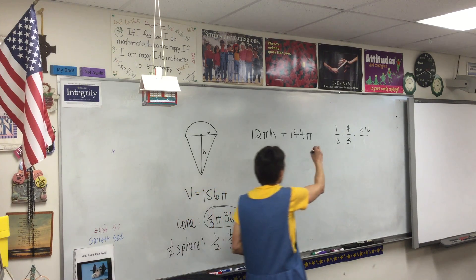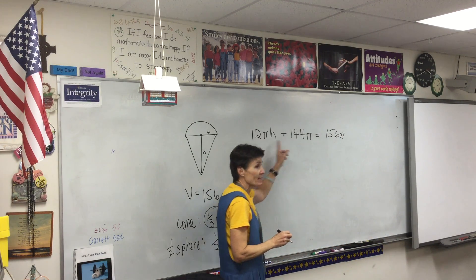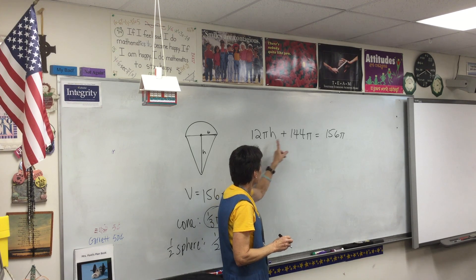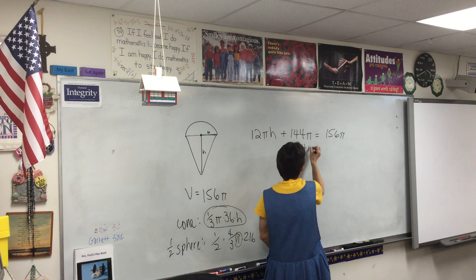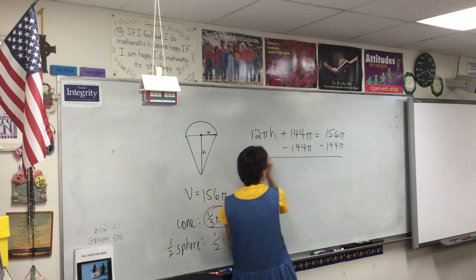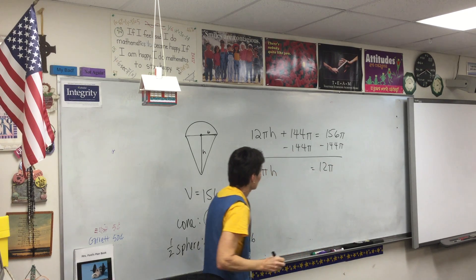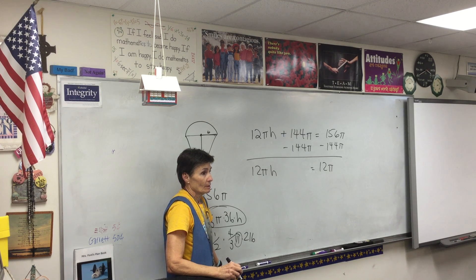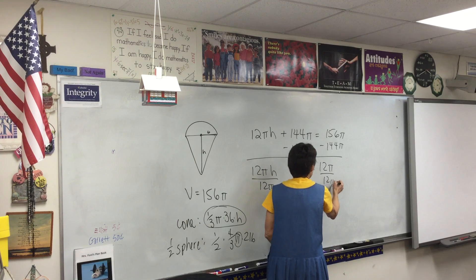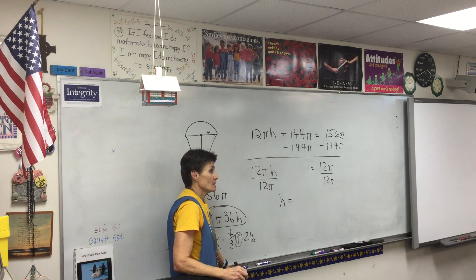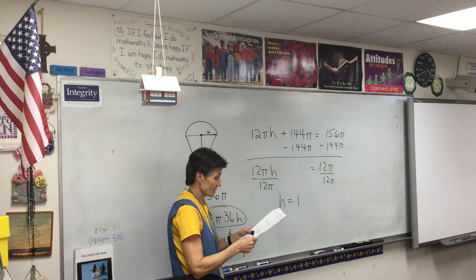And that has to equal the 156π. Now gang, these cannot be added together. Do you see that? They can't be added together because this one has an h. So what are you going to do? Subtract. Subtract 144π. Now I also heard somebody say divide by π. You can do that too. We'll do that next. What is that? 12. 12. Now I can either divide by just the π or I can go ahead and divide by 12π because I'm trying to get h by itself, right? So h will just be not π. 12π over 12π is 1, right? Something divided by itself.